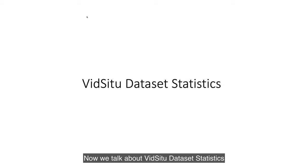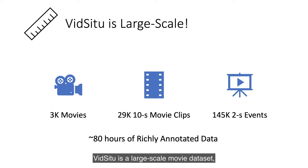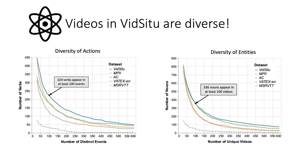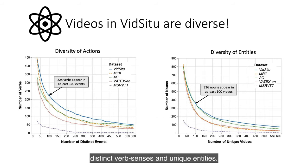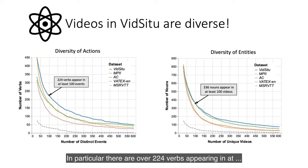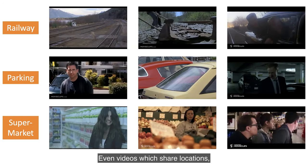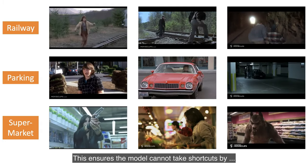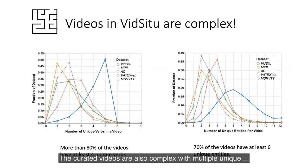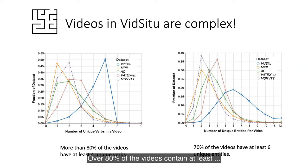Now we talk about VidC2 dataset statistics. VidC2 is a large-scale movie dataset covering 3,000 movies and spanning 29,000 clips, corresponding to over 80 hours of richly annotated video data. The clips in VidC2 are quite diverse, with examples of distinct verb senses and unique entities. In particular, there are over 224 verbs appearing in at least 100 events and 336 unique entities in at least 100 videos. Even videos which share locations depict widely different situations, ensuring the model cannot take shortcuts by looking at only background scene information. Over 80% of the videos contain at least 4 unique verbs and over 70% have at least 6 unique entities.